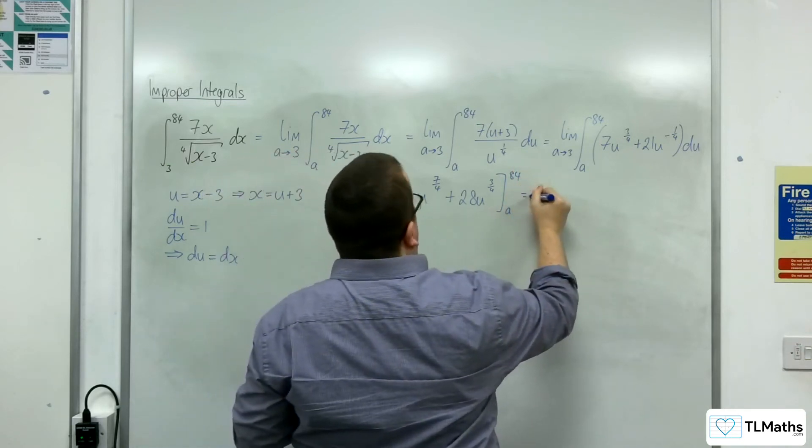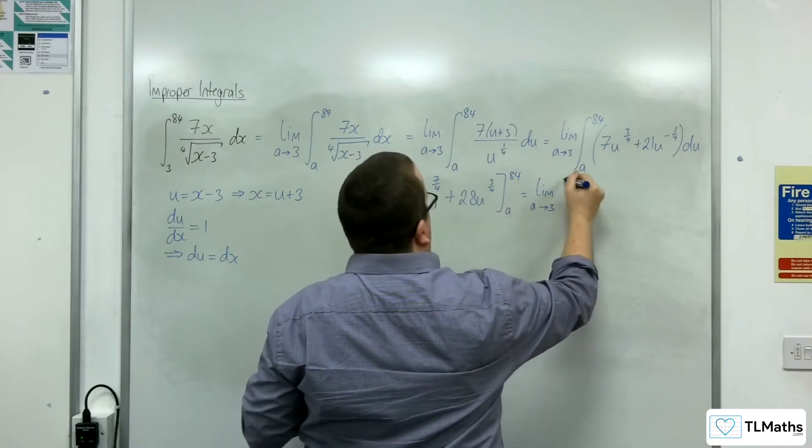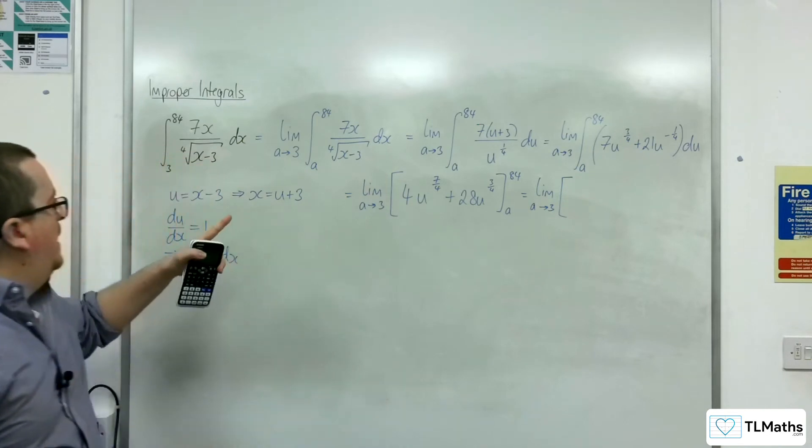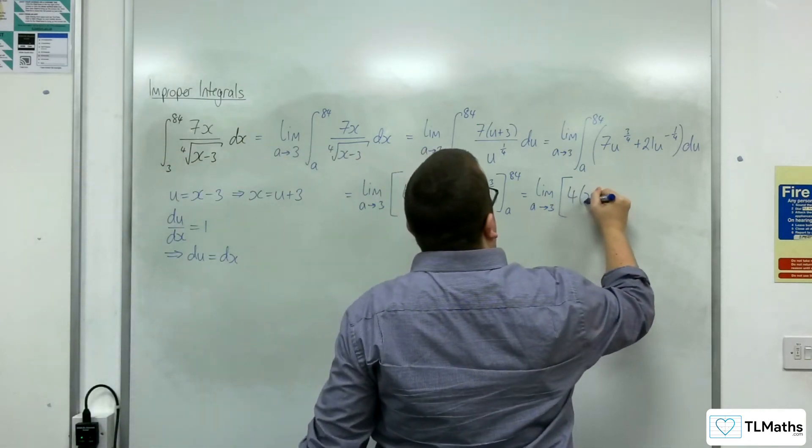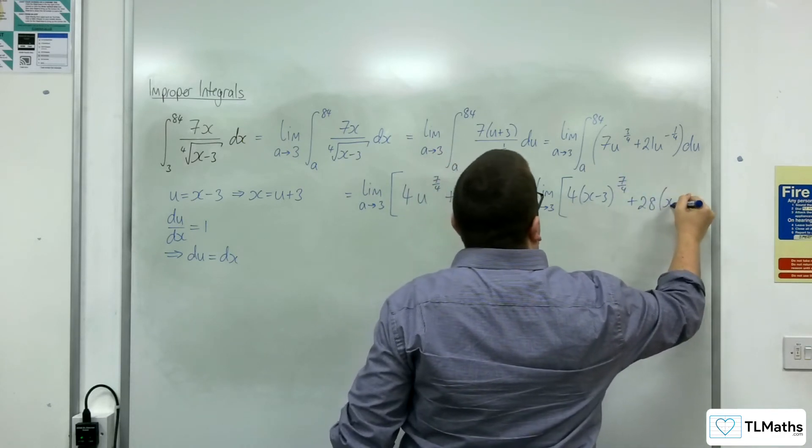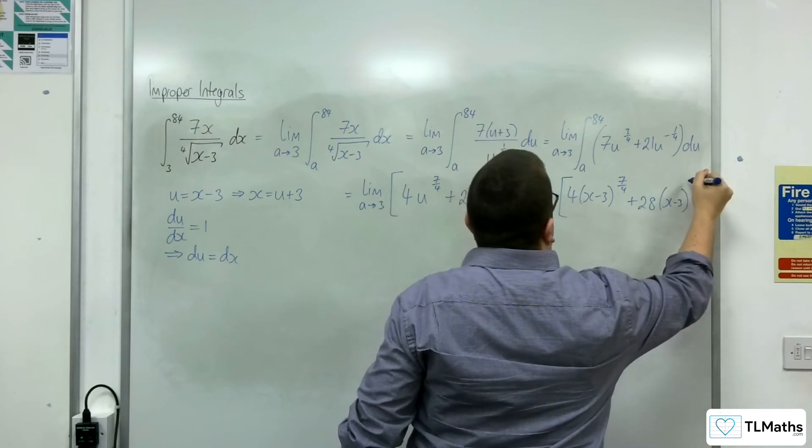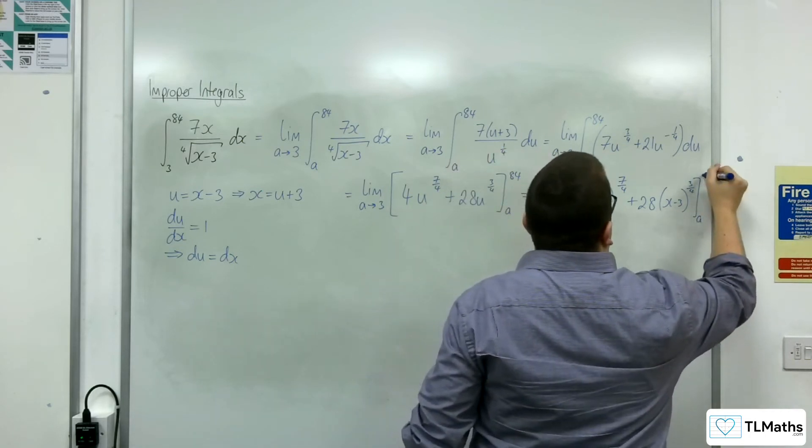Okay. So now I'm going to have to substitute back in, substitute the u back in for x minus 3. So 4 lots of x minus 3 to the 7 quarters plus 28x minus 3 to the 3 quarters, evaluated between a and 84.